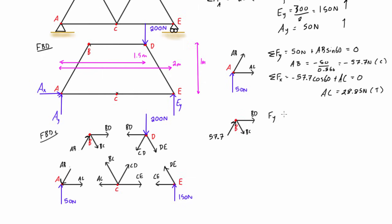Taking the sum of forces in the y-direction at joint B: we have 57.7 times sine 60 minus BC times sine 60, all equal to zero. Dividing out the sine 60, we find BC equals positive 57.7 newtons — positive means tension. As a quick check: the y-component of AB is pushing up, so BC must pull down to achieve equilibrium, which is consistent.